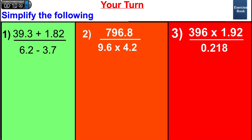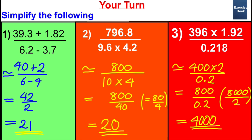Try the following three questions. I'll put the answers up in 10 seconds. Here are the answers to these three questions. I showed my rounding stage and also all my workings between. The first one I estimated as 40 add 2 divided by 6 take away 4, which is 42 divided by 2 equals 21. The second one I estimated to be equal to 20, and the last one I estimated the final answer was equal to 4,000.